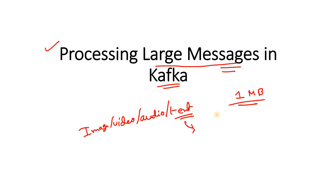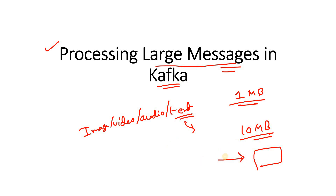Maybe you can think: if my use case requires more volume, I will increase this particular limit by changing the configuration to 10 MB. So from the producer we can publish messages up to a maximum size of 10 MB. But what if in future the volume increases — currently the maximum size is 10 MB, but what if tomorrow it is 12 MB? Then the message will not be able to be published in the Kafka topic from the producer. So we need a better solution where we don't need to worry about this kind of threshold value.